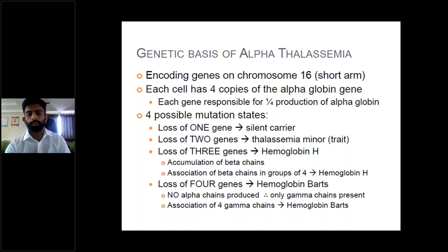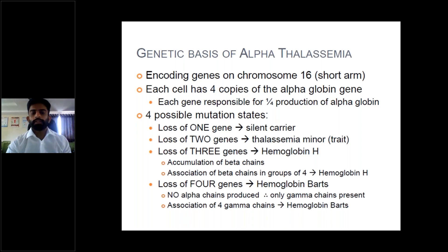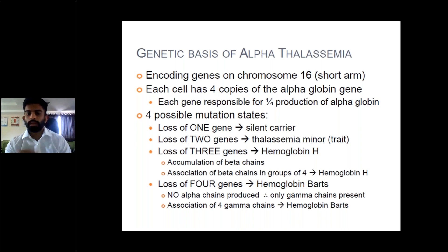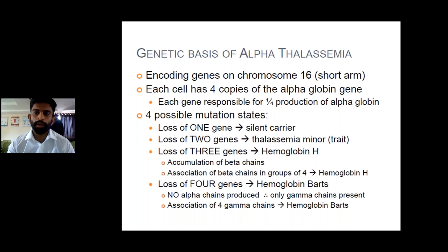In hemoglobin H disease, four beta chains accumulate and form hemoglobin H. The last scenario is loss of all four alpha genes — hemoglobin Barts — where no alpha chains are produced and only gamma chains are present. Association of four gamma chains leads to hemoglobin Barts, which causes fetal death, resulting in a stillborn newborn.